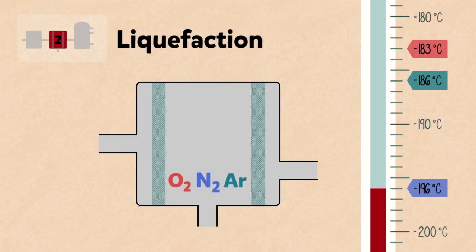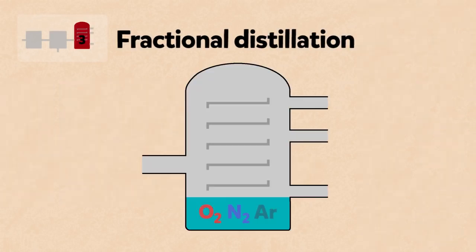The liquid nitrogen, argon and oxygen are then separated by fractional distillation. Let's have a look at this process in detail.